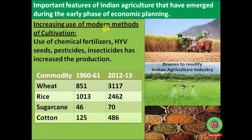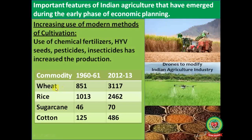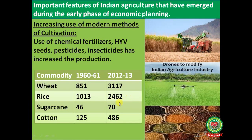Next is increasing use of modern methods of cultivation. The use of chemical fertilizers, hybrid seeds, pesticides, and insecticides has increased production. Wheat figures increased from 851 to 3,170 kg between 1960–61 and 2012–13. Rice increased from 1,013 to 2,462 kg, and sugarcane also increased from 46 in 1960 to 2,000 in 2012–13.